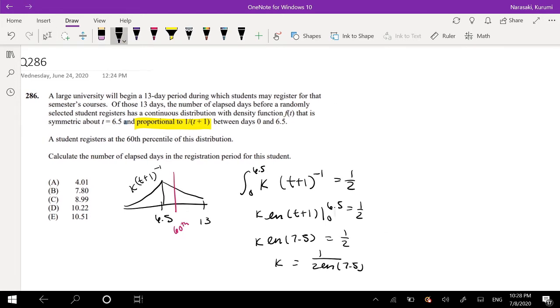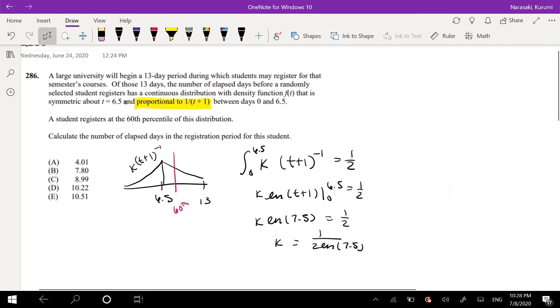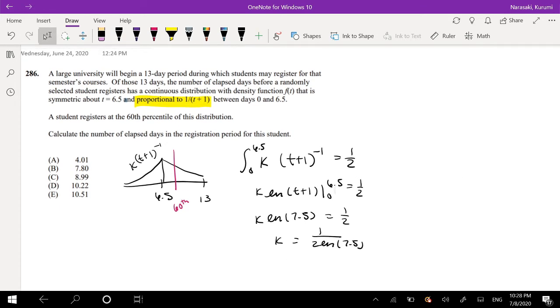Okay, so then, the next part is where we actually get into the problem. The problem asks: student registers at the 60th percentile of the distribution, calculate the number of elapsed days in the registration period for the student. So they're saying find this part, this value x60, such that the integration of that is equal to 60%. So we can also think of it like this. We can think of it like going from 0 to 6.5 plus some value 6.5 to this value x60, which should add up to 0.6.